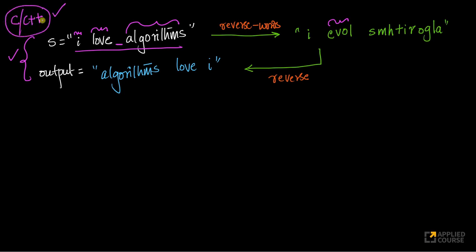In the C programming language, if I have a blank space, I know it is a separator between two words. The end of the string I know is backslash zero. I'll use the fact that you have a blank space between every word. I'll cut each word and reverse these individual words using a function called reverse. Now, once I get this string, what I do is reverse this whole string.